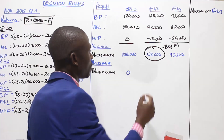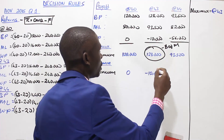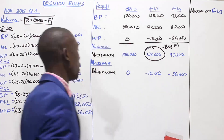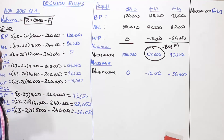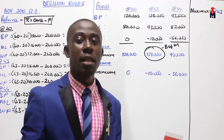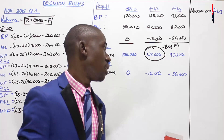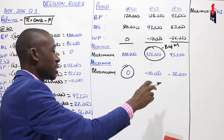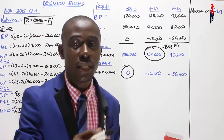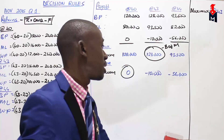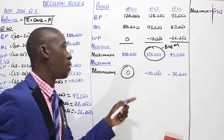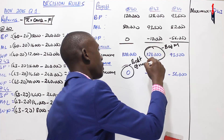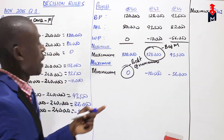At 43, the minimum is minus 10,000. At 44, the minimum is minus 56,000. After we've selected the minimums, the next step is to select the best of the minimums. The best of the minimums is 0 — remember, 0 is greater than any negative value, whether negative 10,000 or negative 56,000. So 0 is the best of the minimums.